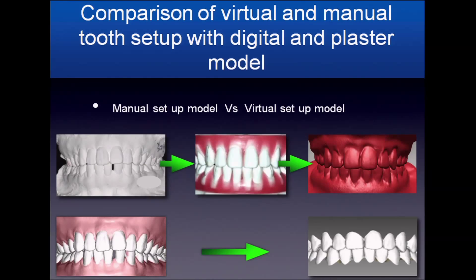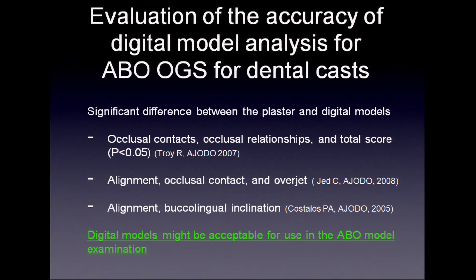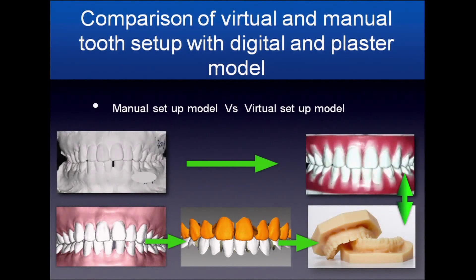From this study, we have prepared three interesting topics for readers. How should we evaluate virtual and manual setups? We thought of measuring ABO score using a virtual program, but there were reports of significant differences in ABO score between virtual and manual analysis of digital and plaster models. Eventually, we decided to print the virtual model by 3D printer, and all values were measured manually.